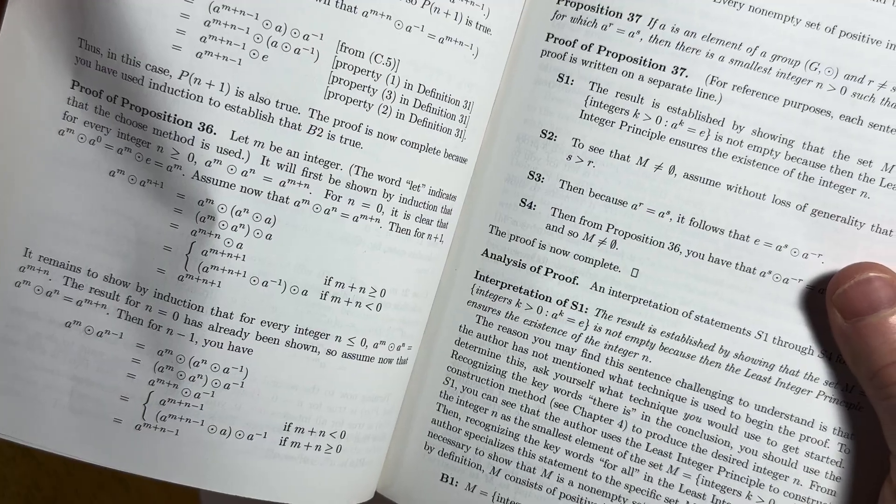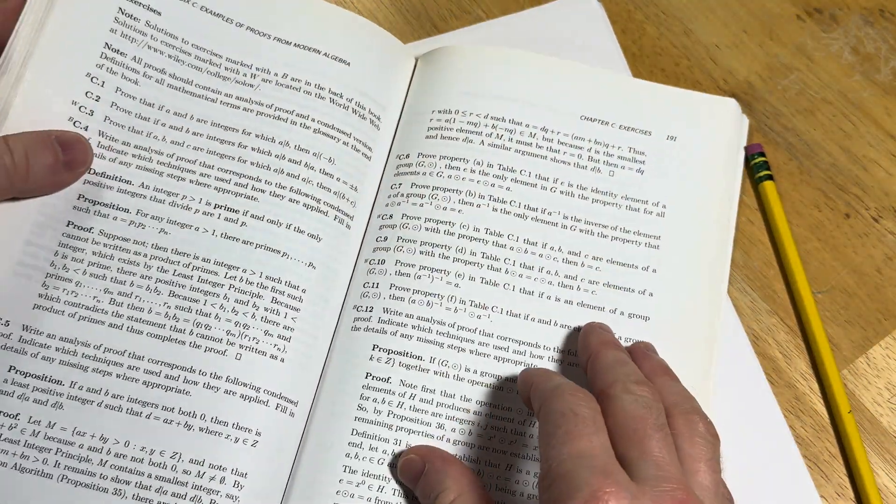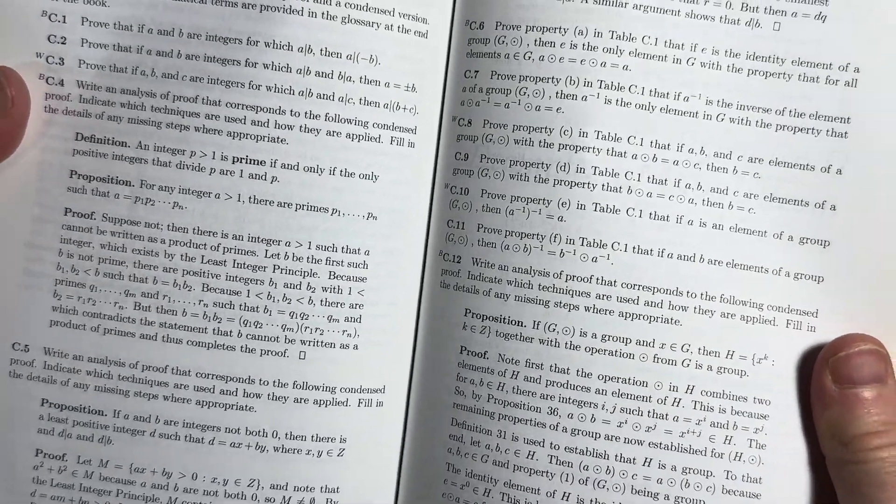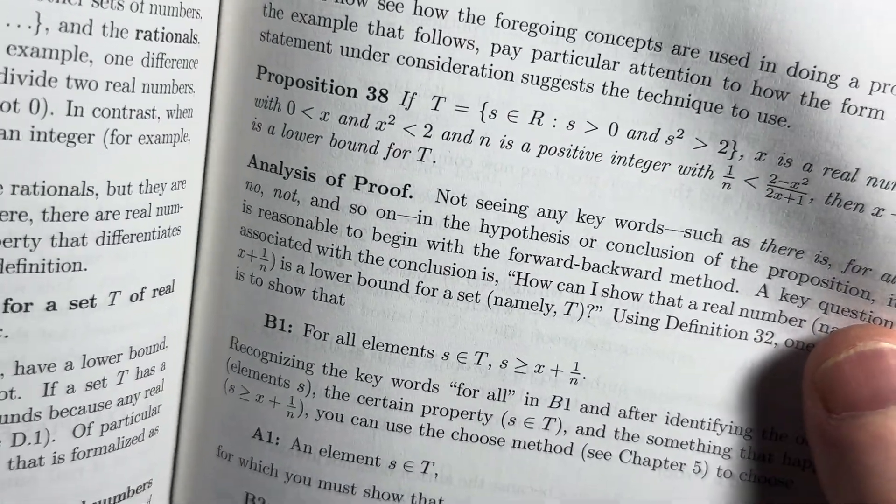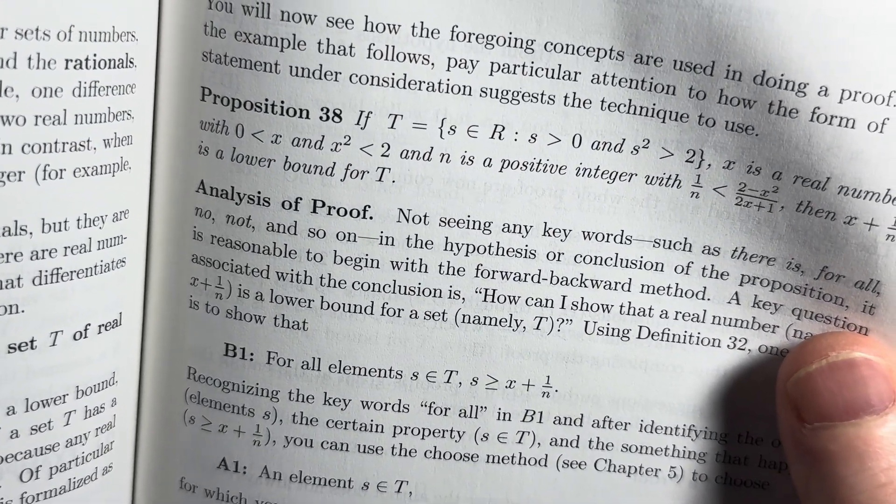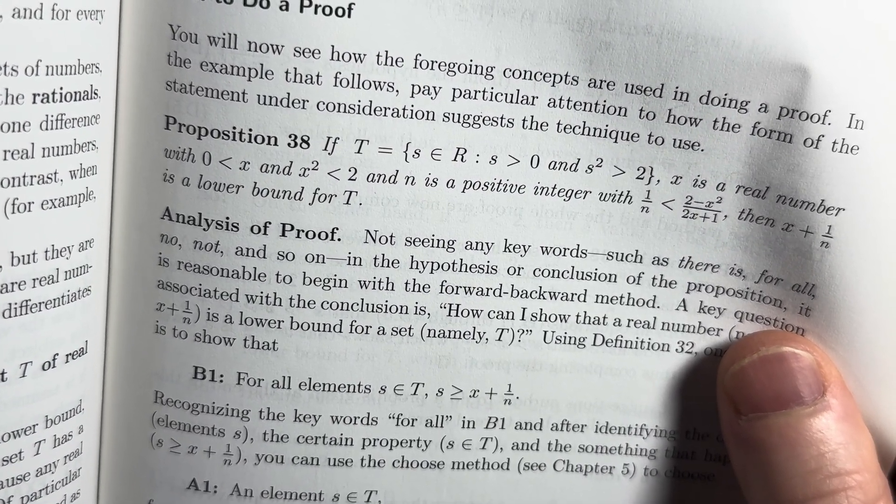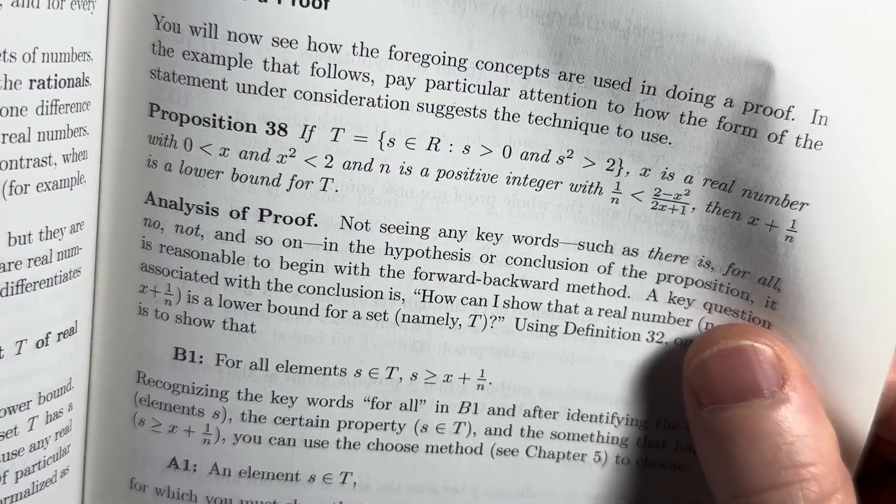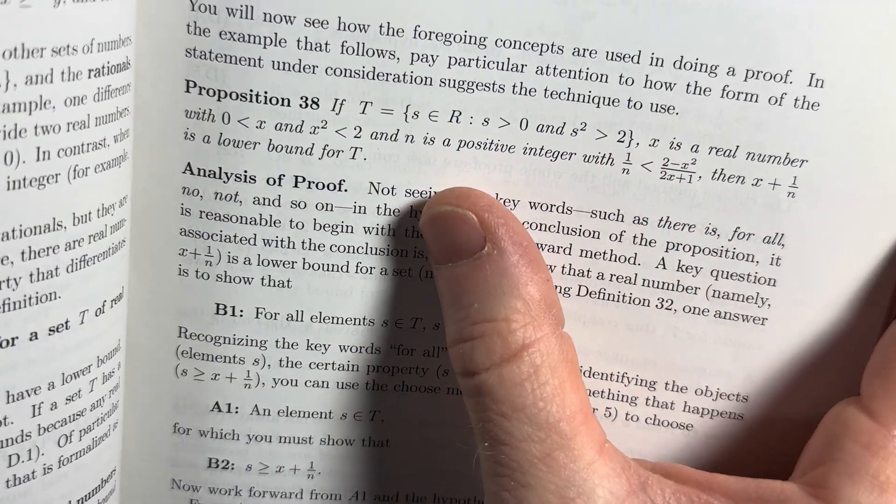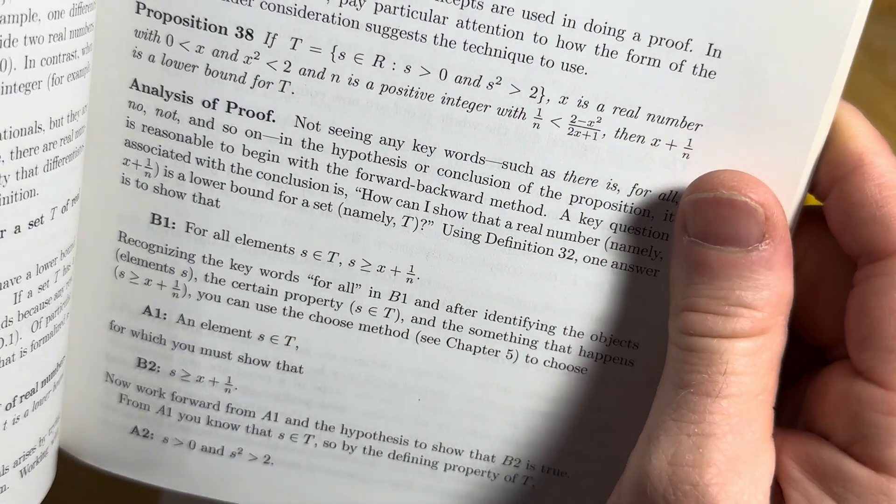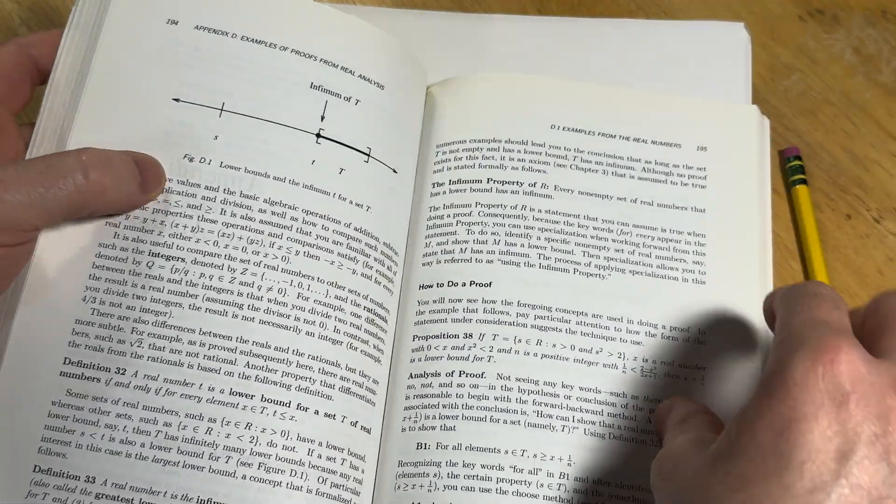And then there's some other stuff, some other proofs. So, it goes through very carefully and gives proofs. Here's one. If T is the set of all S and R such that S is positive and S squared is greater than two, X is a real number, and X squared is less than two, and N is a positive integer. With that, then X plus one over N is a lower bound for T. So, it's quite an interesting statement there. And then it goes through and it gives you a full proof of that statement and analyzes everything very carefully.